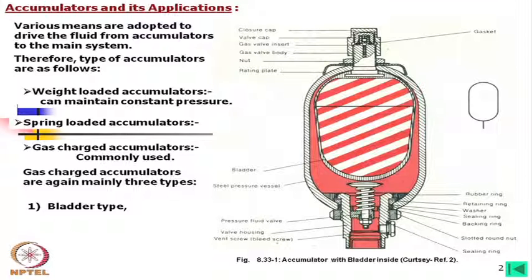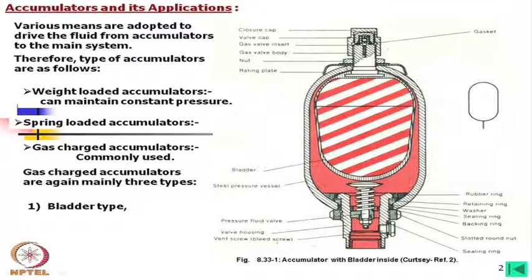Looking at the other details: there is a closure cap to protect the main valve cap and the total valve system. If you remove the closure cap, there is a valve cap, and if you remove that, there is a valve — basically a non-return valve — through which we can insert the gas. Then there is the valve body, fittings of the valve on the steel vessel, and a rating plate which by tightening makes it leak-proof with a gasket.